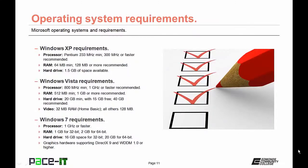Windows Vista really ramped up the requirements. On the processor side, the minimum was 800 MHz, with 1 GHz or faster recommended. RAM requirements also ramped up substantially — the minimum was 512 MB, with 1 GB or more recommended. For the first time, Microsoft required a minimum hard drive size of 20 gigabytes, with 15 gigabytes of that being free.